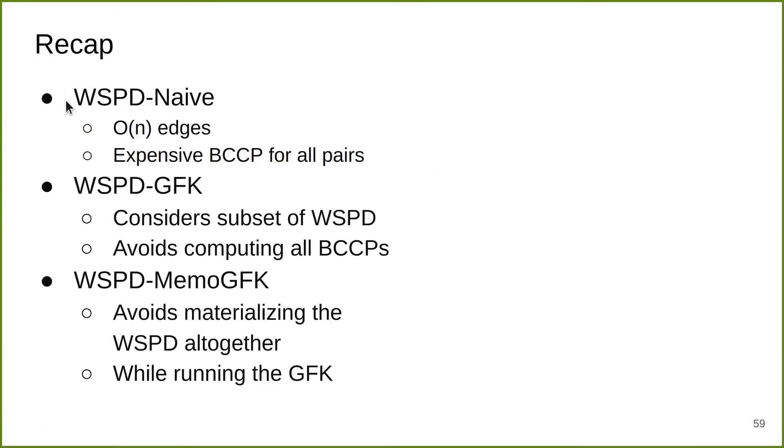Here's a recap of the methods that I have introduced and which we are going to show here. WSPD-naive is the method where it generates a linear number of edges, but it's pretty expensive to compute all their BCCPs. For the parallel WSPD-GFK, it only considers a subset of WSPD and uses filtering to prune out some of the BCCP computations. For our memory-optimized GFK, which we call WSPD-MemoGFK, it avoids materializing the WSPD altogether and still runs the GFK algorithm.